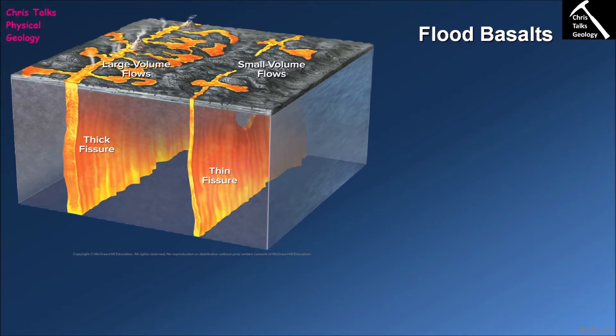Flood basalt eruptions are the third style of eruption associated with mafic lavas. We've looked at scoria cone volcanoes, which are also called cinder cone volcanoes, we've looked at shield volcanoes, and now we're moving on to flood basalt eruptions. Flood basalt eruptions take place where we have a fissure eruption which is allowing lava to extrude onto the surface of the earth.